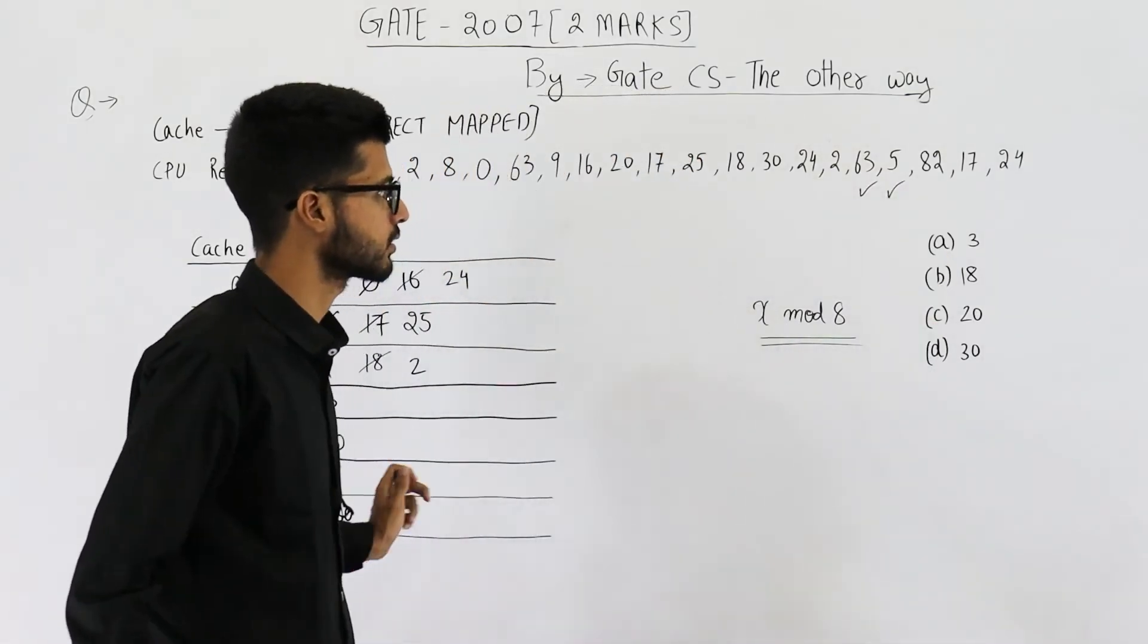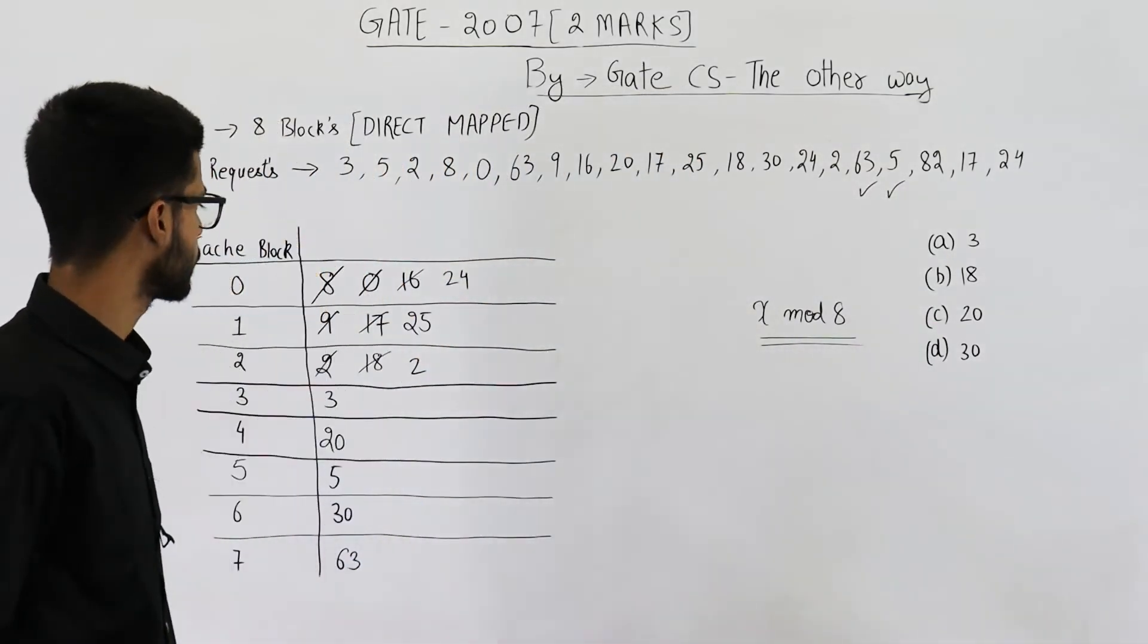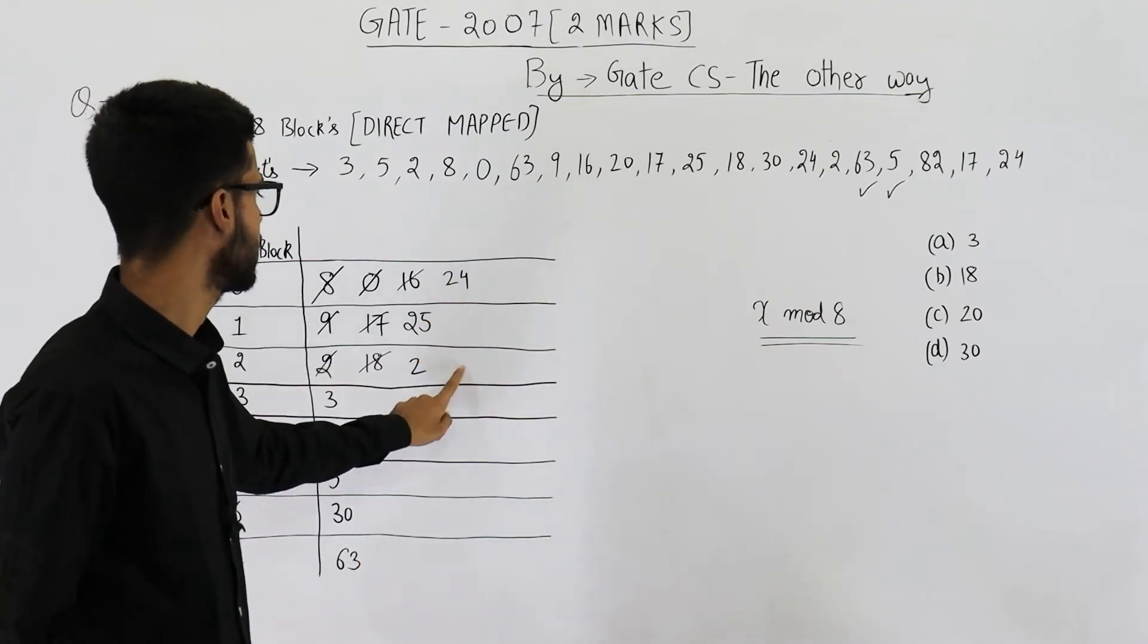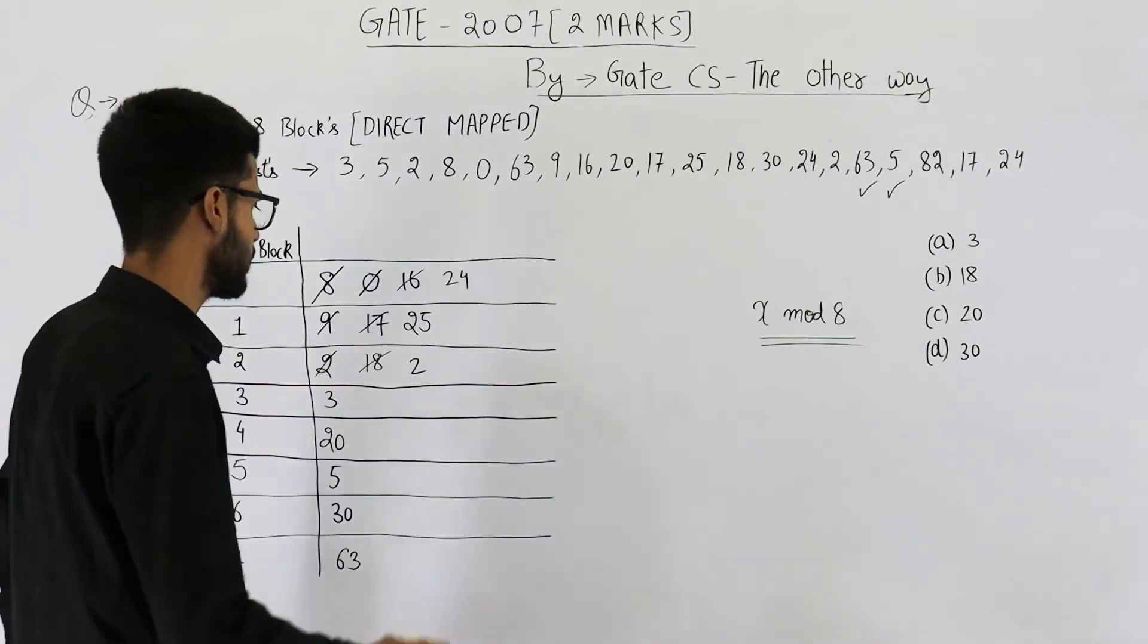Then you have a request for 82. 8 tens are 80. So 80 will be mapped here, 81, 82. 82 will be mapped here.